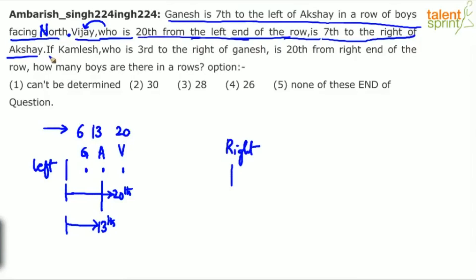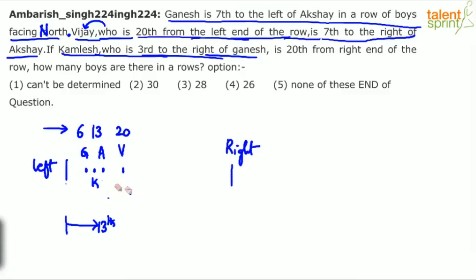The next point says Kamlesh is 3rd to the right of Ganesh. Right of Ganesh means Kamlesh will come in between, on the right side of Ganesh. So Kamlesh's position will be 9th from the left — because Ganesh is 6th, plus 3 persons: 7th, 8th, and 9th. Kamlesh's position from the left is 9th.